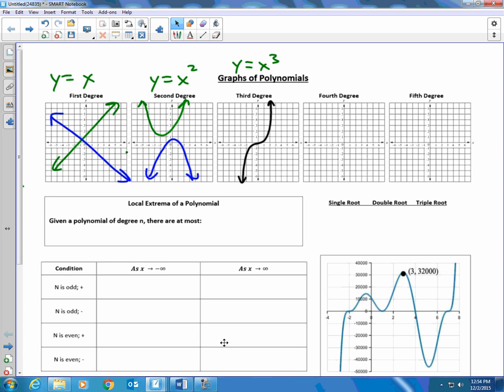what happens is we get what we call this hidden behavior, and you might get a shape that looks like that. It's got a couple of bumps in it. That's if it's positive. If it's negative, it may look something like that.